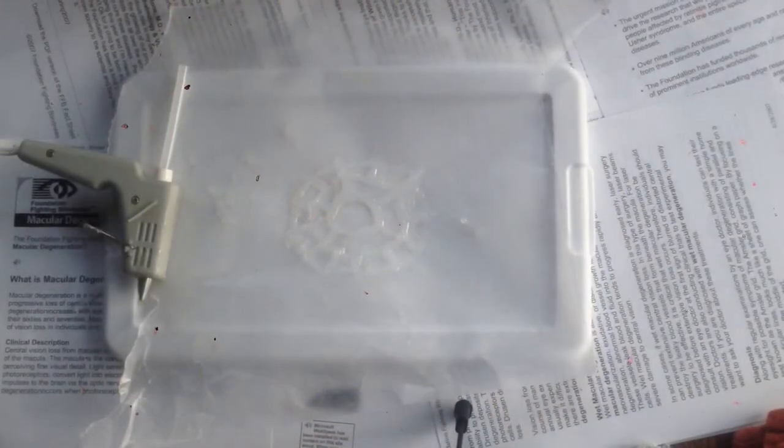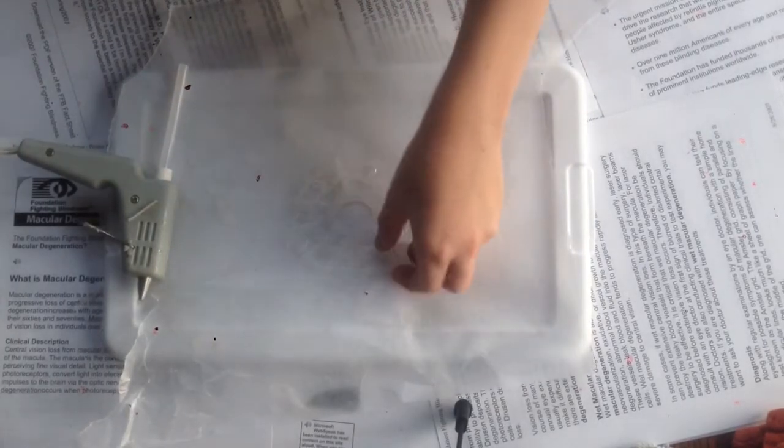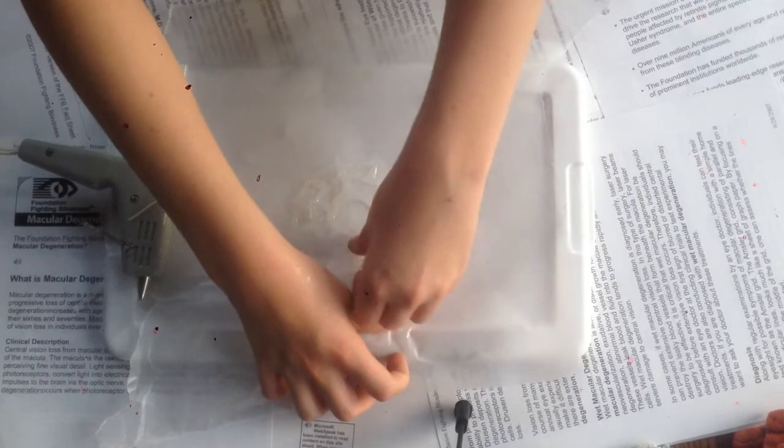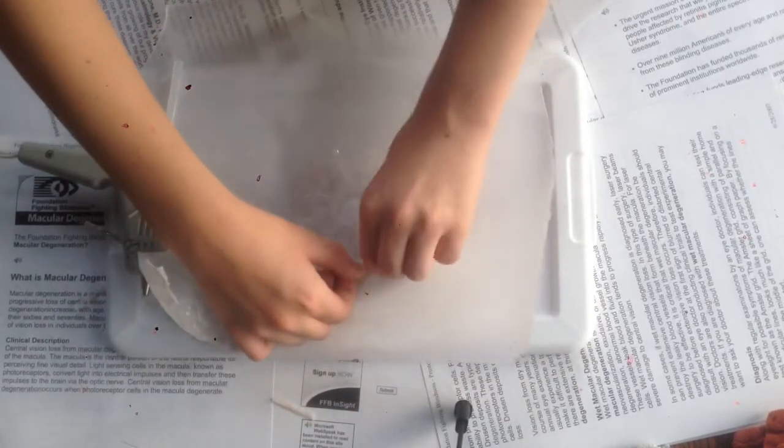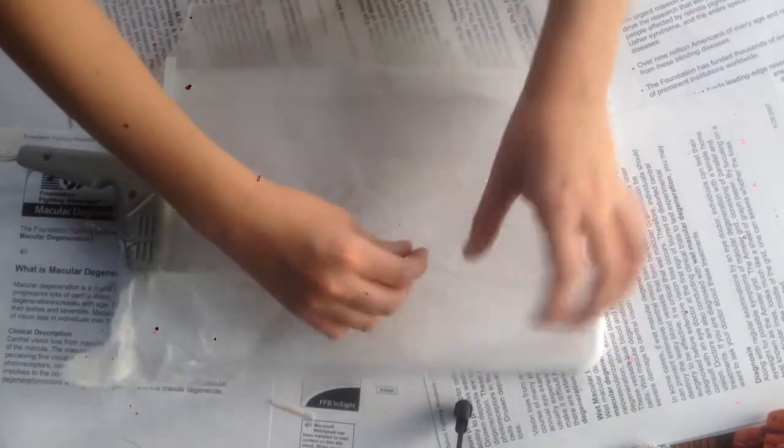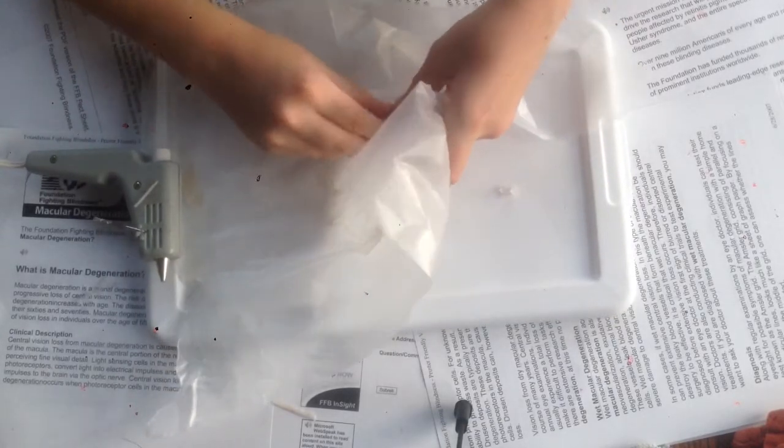For this one, I'm going to be making a spider web for Halloween. Once you finish your design and it has dried, you can start peeling it off. It might not come off right away; it takes some working. If you try ripping it off with the wax paper, it comes off a lot easier.